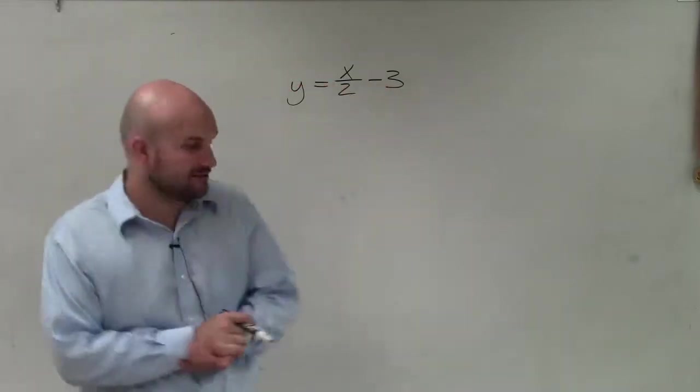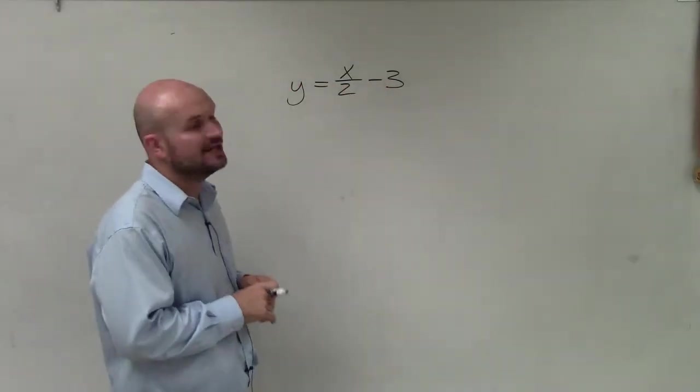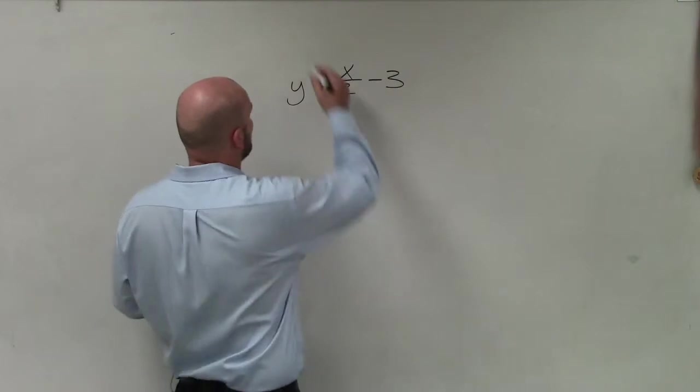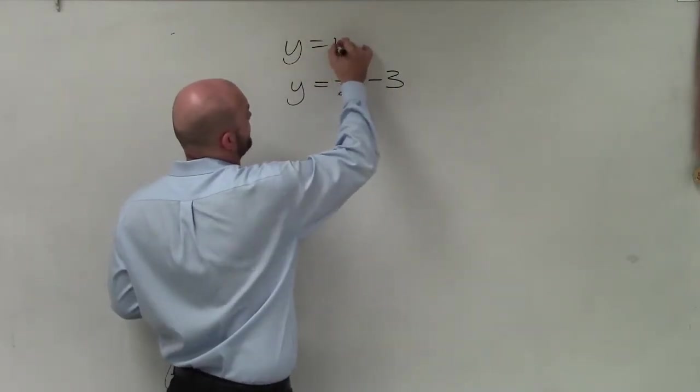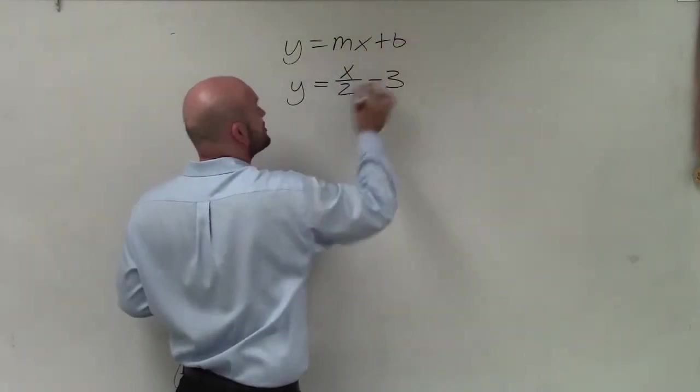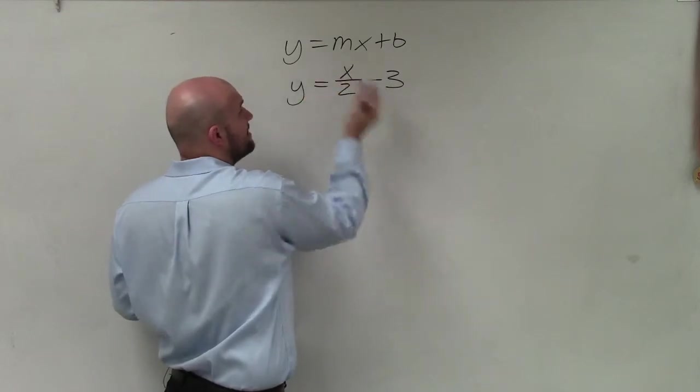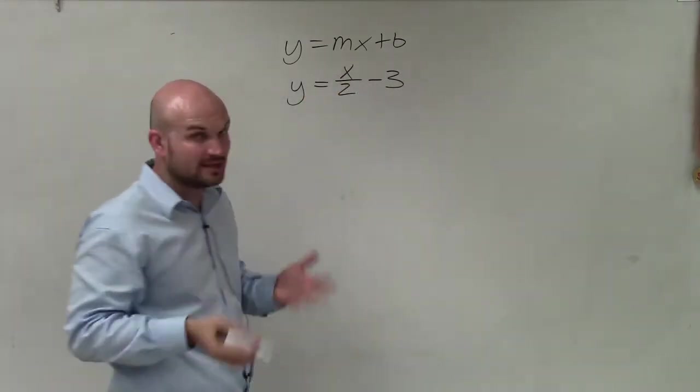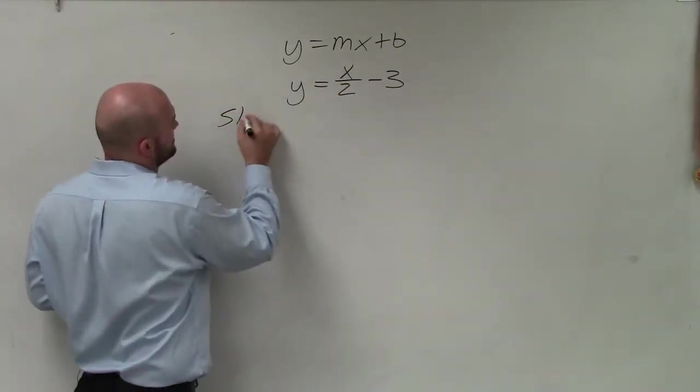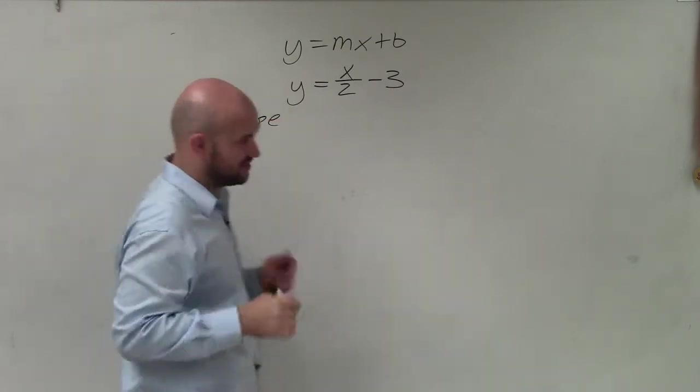Welcome. What I'd like to do is show you how to graph this equation using slope-intercept form. First thing we want to do is make sure it's in slope-intercept form, which actually this one is. And then we want to be able to identify what the slope is and what the y-intercept is. So it brings us to a question here.